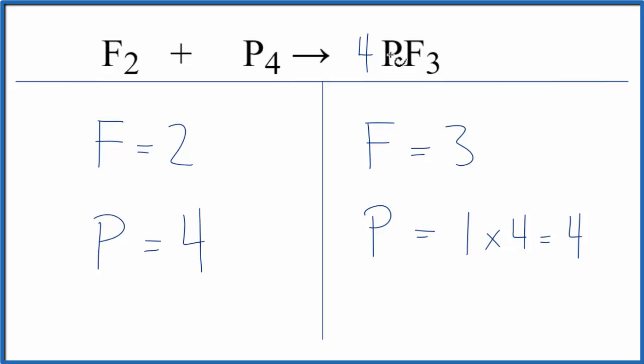And then three times the four, that gives us 12 fluorines. That's pretty good because that's an even number. Two times something will give me 12. Two times six, that equals 12. So that means the coefficient here in front of the F2, the fluorine gas, is going to be six.